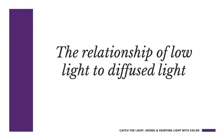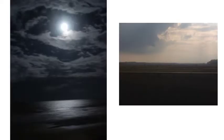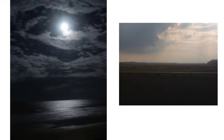That leads us to the relationship of low light to diffuse light. It's easiest to think of low light as being extremely diffused light — an example of extreme diffusion. You can see this by comparing photographs of the nocturne, the moon over the ocean, and the rainstorm moving in over the marsh. We have much the same situation as diffused light, but carried to an extreme. That's why this module follows on the Diffused Light Atmospheric Conditions Module.